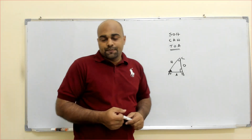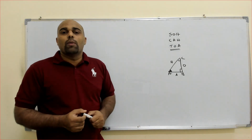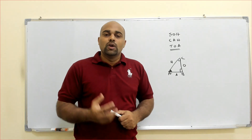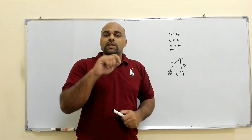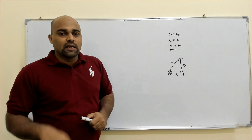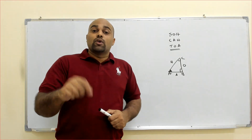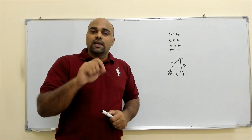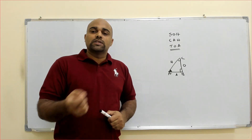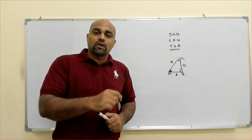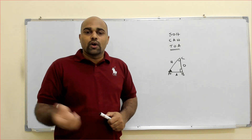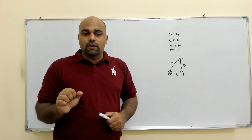The reciprocal: sin reciprocal is cosec, cos reciprocal is sec, and tan reciprocal is cot. You already learned the complementary laws and the reciprocal ratios. Complementary ratios: sin complementary is cosine, cosine complementary is sine, tan complementary is cot, cosec complementary is sec, sec complementary is cosec, cot complementary is tan — that everything you learn.